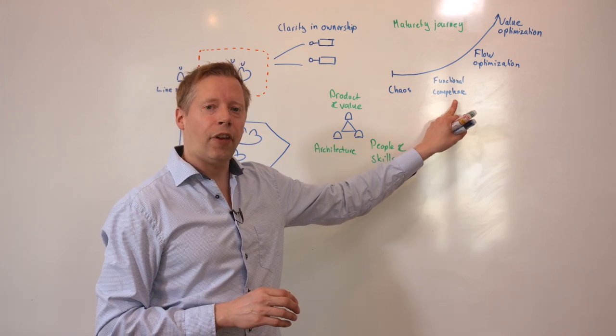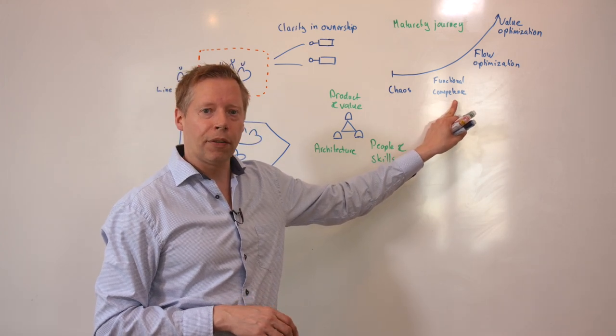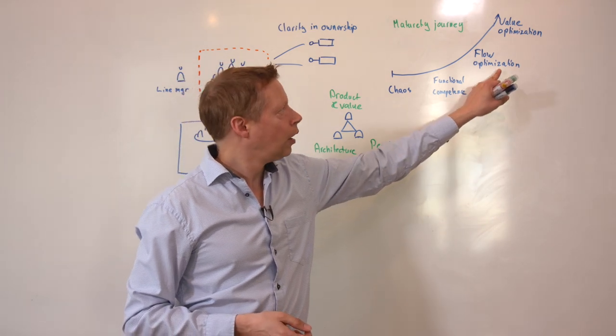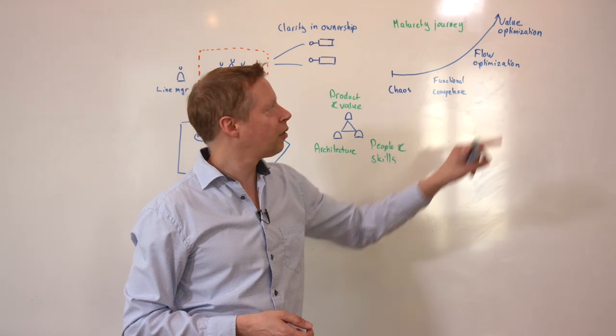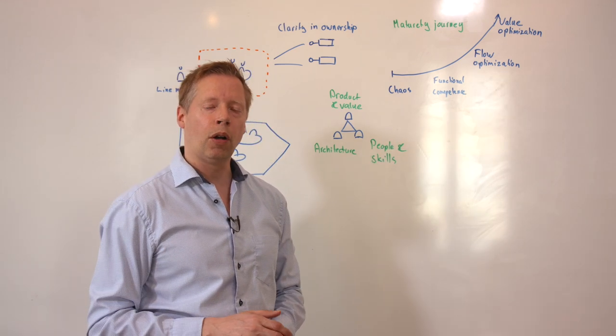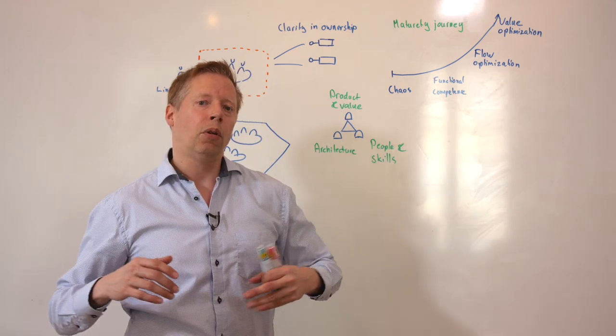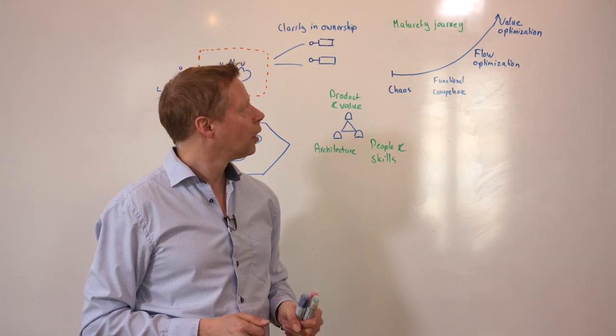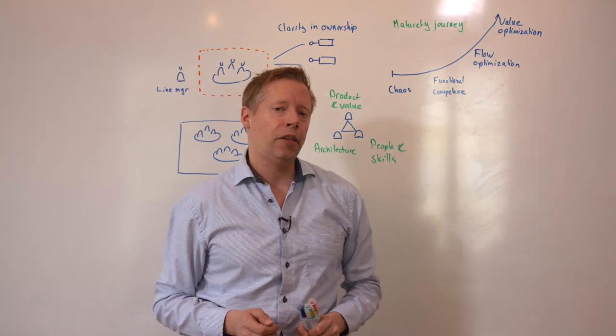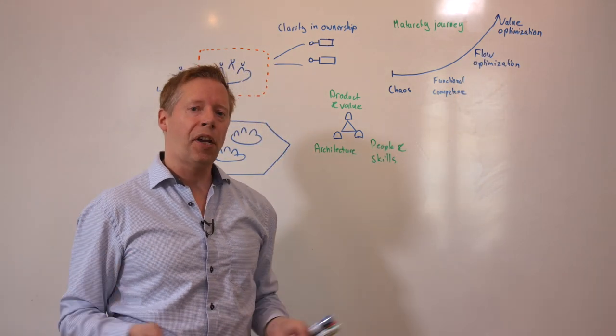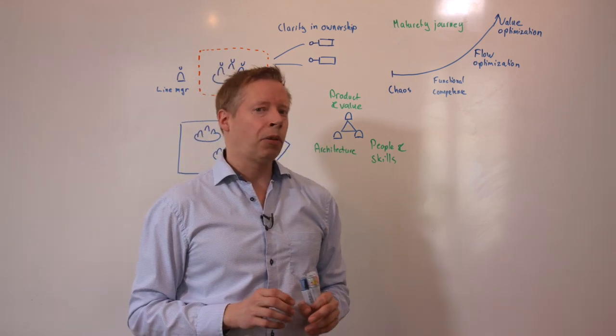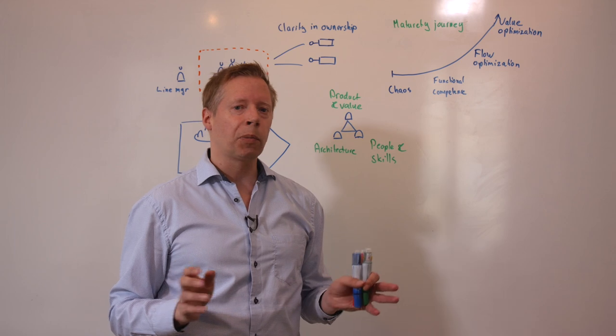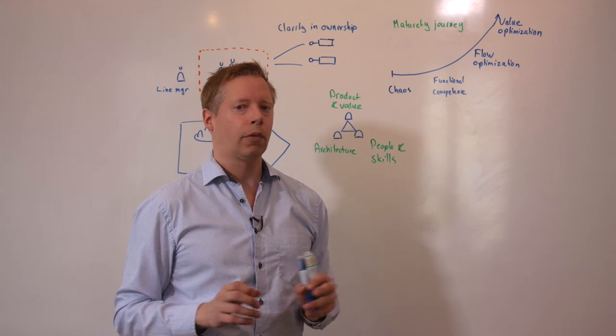And then you get to a phase of functional competence. You start to build functional skills that can do things. The third stage is when you get flow optimization going. This is where you shorten the time to market across teams and inside teams. And at the final stage you get value optimization. And at this stage we're not really concerned about how we solve the problem. We're here to solve customers problems and we do that fluently.